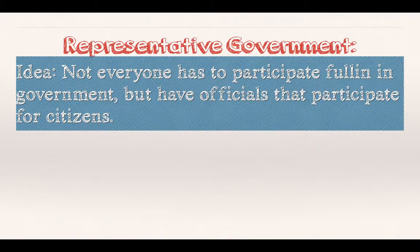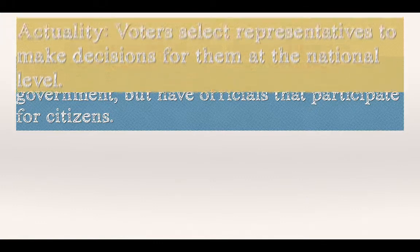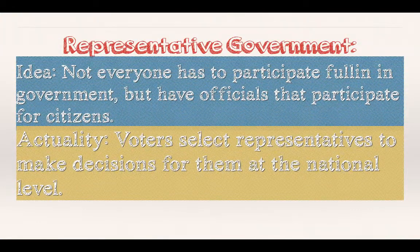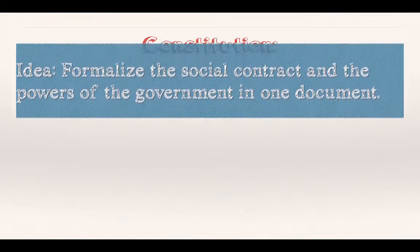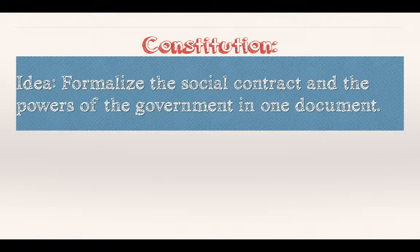Next, the representative government: not everyone has to participate fully in government, but officials participate on behalf of citizens. In the United States, we select representatives to go to Washington, D.C. and to Indianapolis to help us make decisions. Examples include English Parliament, the Congress of the United States, and the Congress of Indiana. Last but not least is the Constitution, which is the formalization of the social contract between the people and the government, with the powers the government can have all laid out in one document.